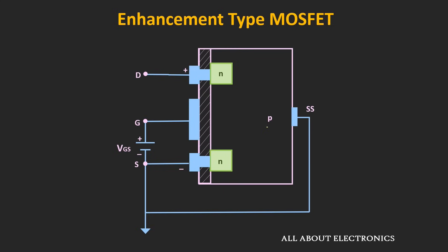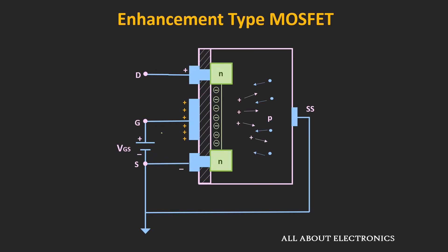Holes are the majority carriers in this P-type substrate. Whenever we apply a positive voltage at the gate terminal, the holes near the oxide layer will be pushed away from the gate terminal, and at the same time the electrons, which are the minority carriers in the P-type substrate, will get attracted towards the gate terminal. But at lower values of Vgs, these electrons will recombine with the majority charge carriers.